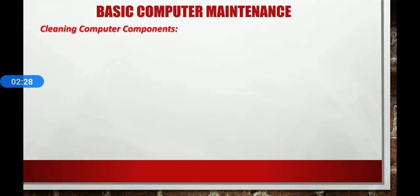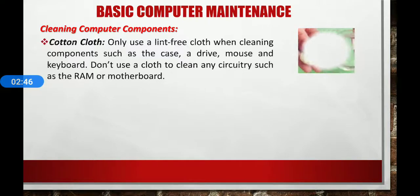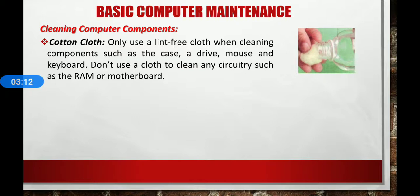Now let's see cleaning computer components. Physical cleaning of computer components is done by switching off your computer first. Then you can use different cleaning tools while following general cleaning guidelines. The commonly used cleaning tools for physical components of computers are: first, cotton cloth — only use lint-free cloth when cleaning components such as the case, drive, mouse, and keyboard. Do not use a cloth to clean any circuitry such as RAM or motherboard.